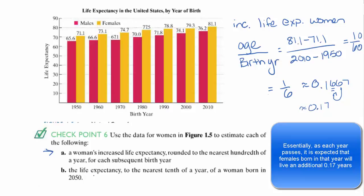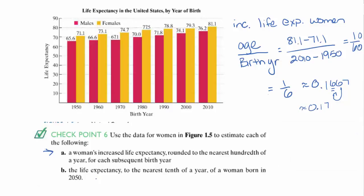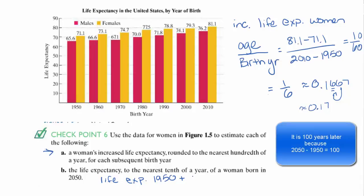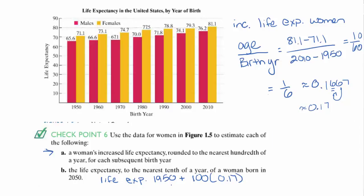This is about 0.17 years of life expectancy increase per birth year. Now the problem asks us to find the life expectancy to the nearest tenth of a year of a woman born in 2050. Since 2050 is 100 years beyond 1950, we start with the 1950 life expectancy of 71.1 and add 100 times 0.17, which is 17. So the life expectancy comes out to 88.1 years.